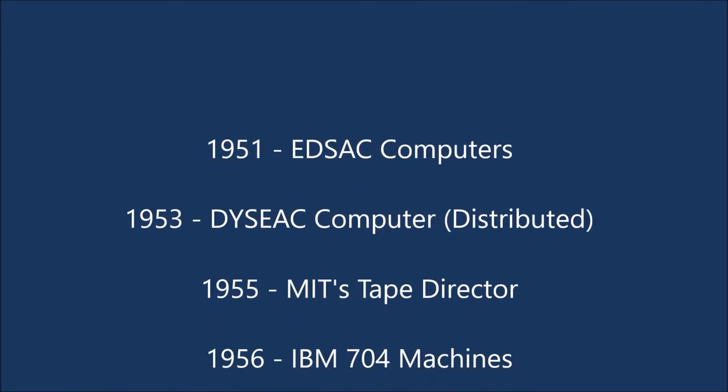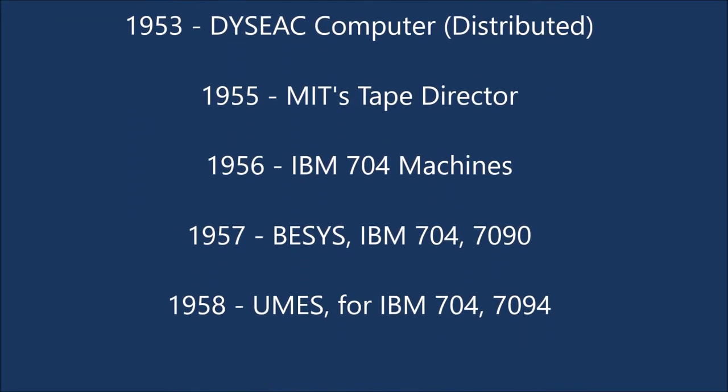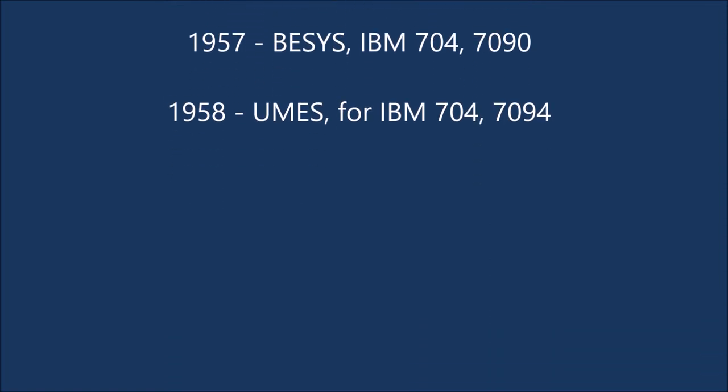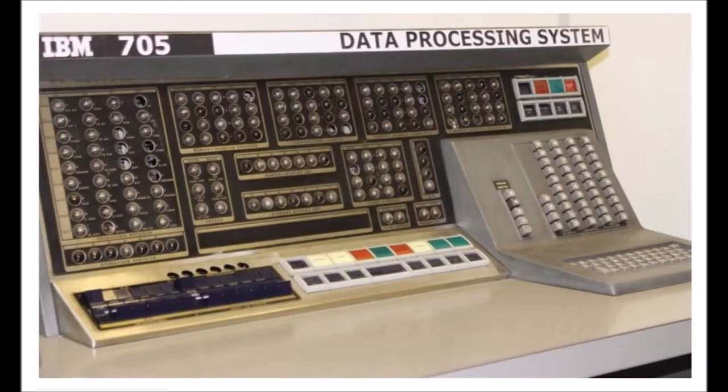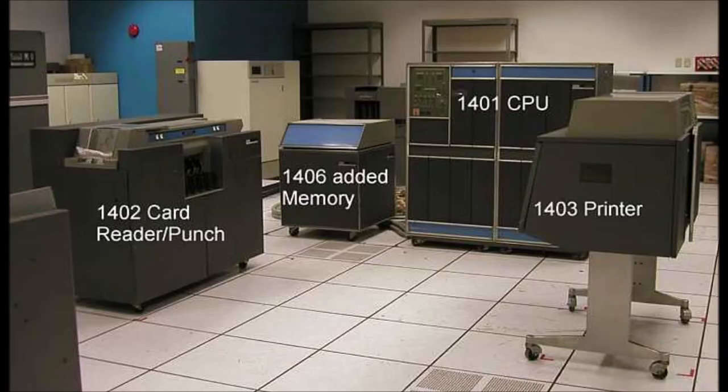Mainframe development occurred in a series of generations starting in the 1950s. A few of the first generation systems were IBM 705 in 1954, and IBM 1401 in 1959.